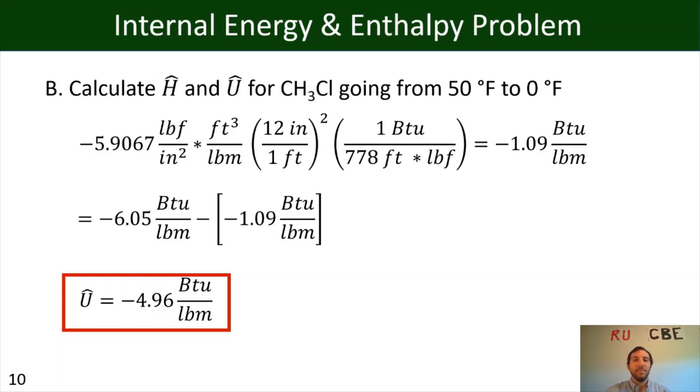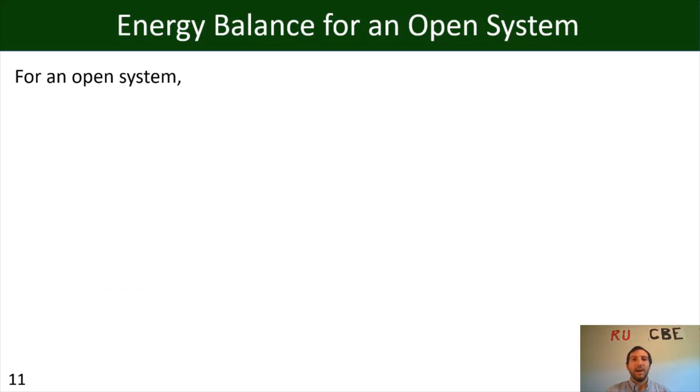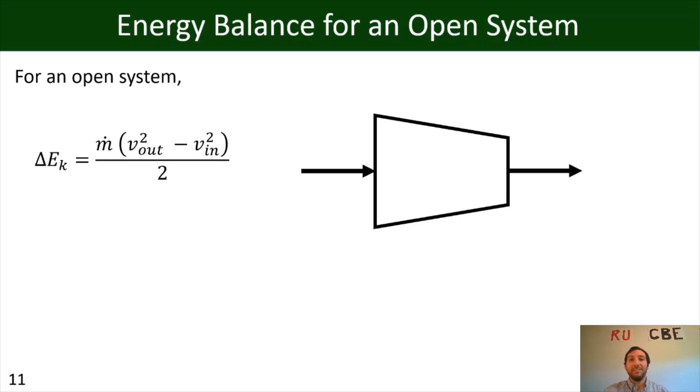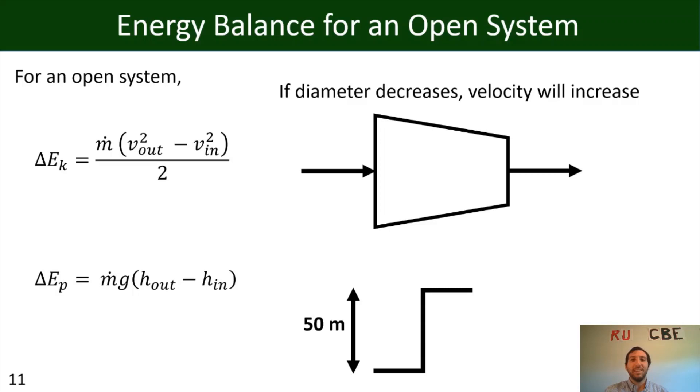All right. And now for an open system, I wanted to also just remind you of a couple of different items that you should just be mindful of. So for example, for our kinetic energy, we know that it's M dot times V out, V squared out minus V squared in divided by 2. And if you have a stream that's flowing through, and it goes through a, let's say a nozzle, where you have material coming in, you have material coming out, what you should pay attention to is if the diameter decreases, that velocity is going to increase, causing you to have a change in your kinetic internal energy. And similarly with our potential energy, if we have material that's starting at a low point and then increases by 50 meters in height, we're going to have an increase in our potential energy.